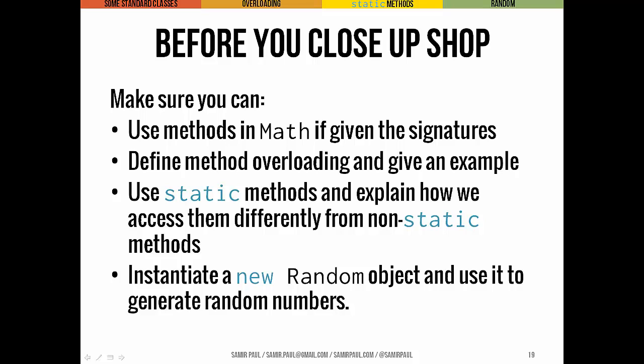You want to be able to know what exactly method overloading is and give me an example of method overloading. In particular, be able to tell me how exactly the compiler can tell which version of a method we're calling. You can tell based on the parameter type that we pass in, the argument that we pass in.